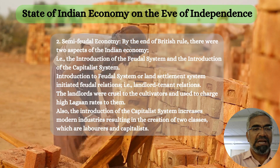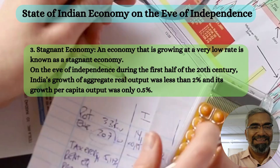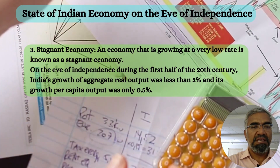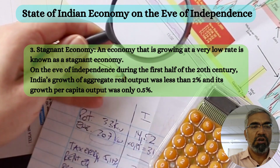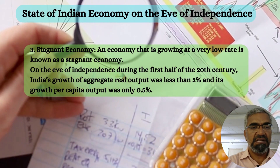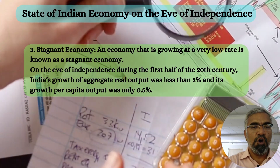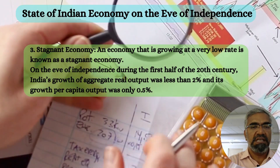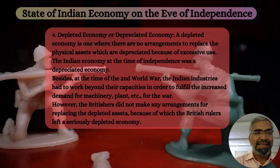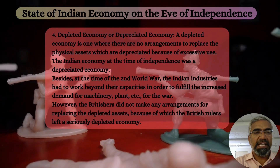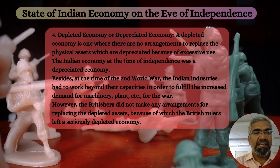The introduction of the capitalist system increased modern industries, resulting in the creation of two classes: laborers and capitalists. Number three: stagnant economy. An economy that is growing at a very low rate is known as a stagnant economy. On the eve of independence, during the first half of the 20th century, India's growth of aggregate real output was less than two percent, and its growth in per capita output was only 0.5 percent.